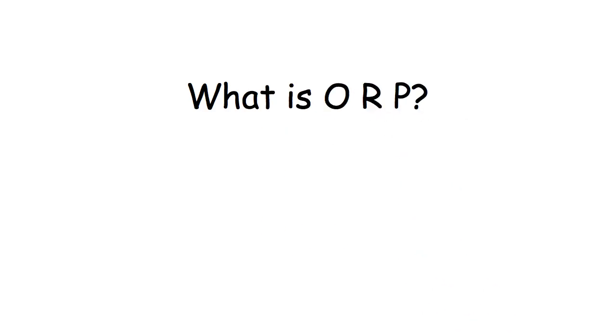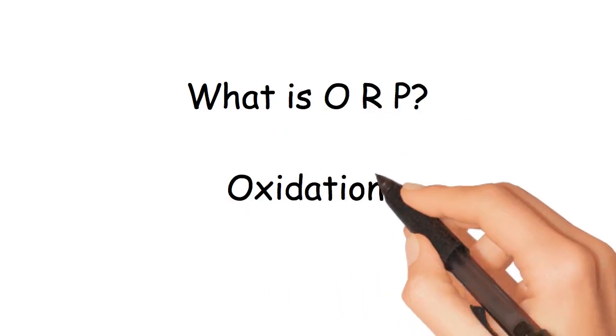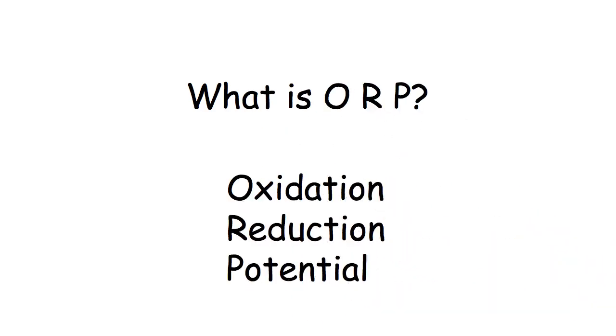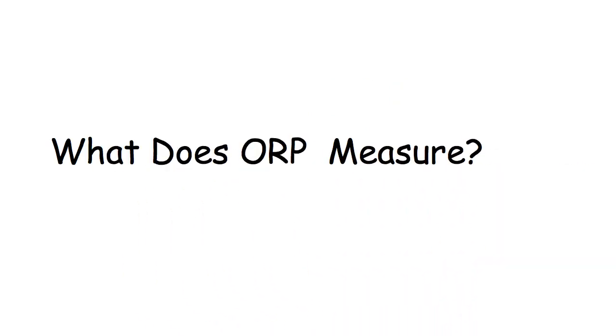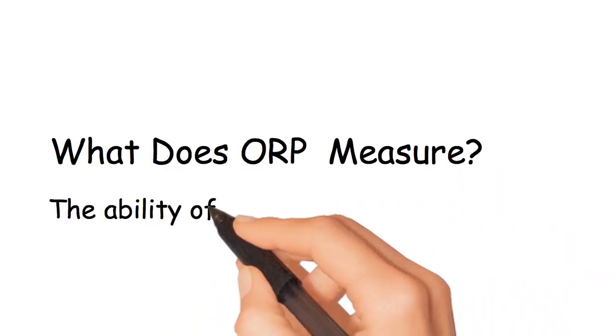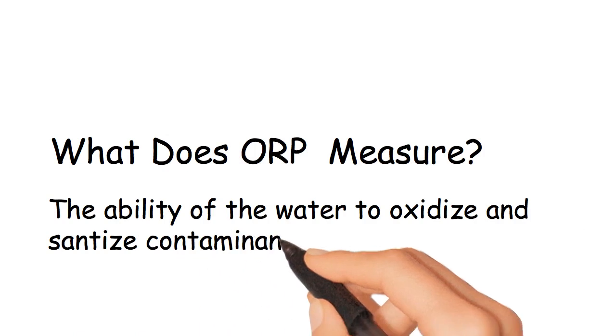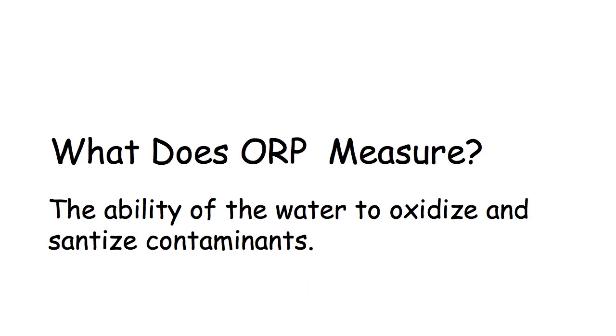What is ORP? ORP stands for oxidation reduction potential. It measures the ability of the water to oxidize and sanitize contaminants.